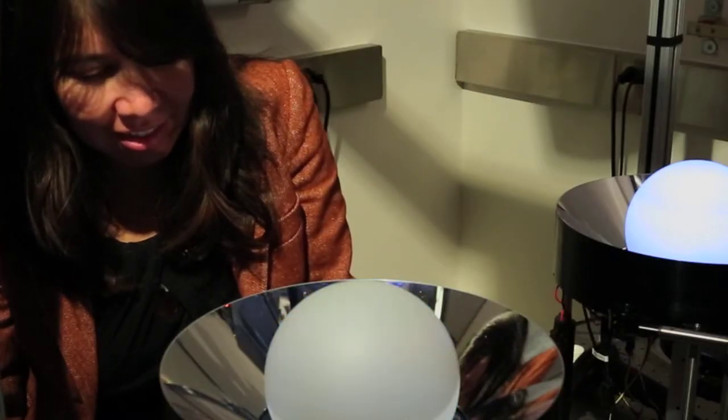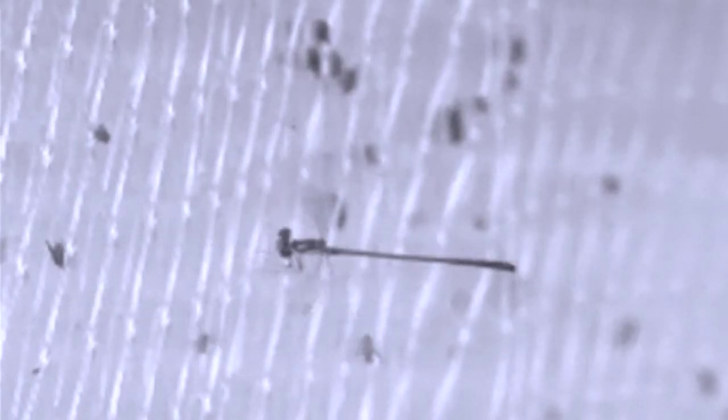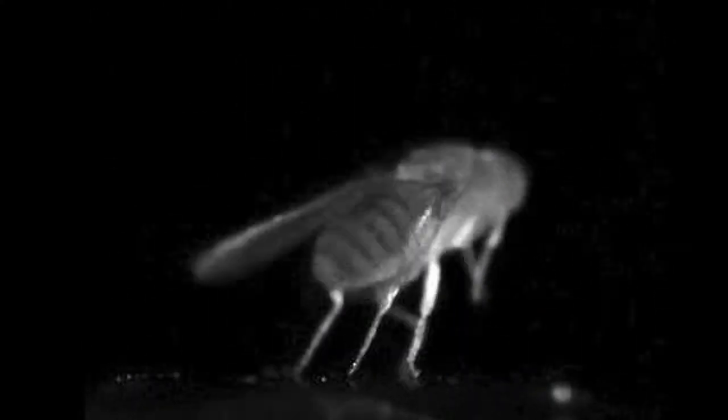Fly escape sequences are not all the same. There are at least two different types. In one case, the fly is trying to get away very quickly, and it doesn't bother to take the time to put its wings up. It will just kick off the ground in a very short escape.